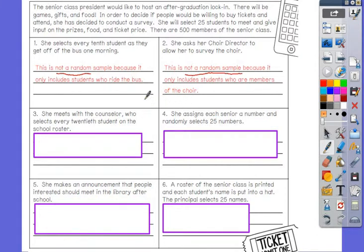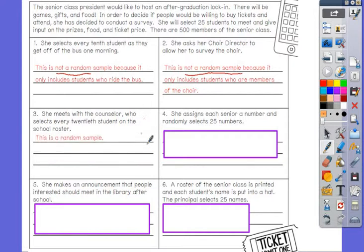Number three, she meets with the counselor who selects every twentieth student on the school roster. Random sampling or not random sampling? That is random sampling because she's using the whole roster and picking every twentieth kid. That's different than this one because this was just bus riders. This includes everybody.